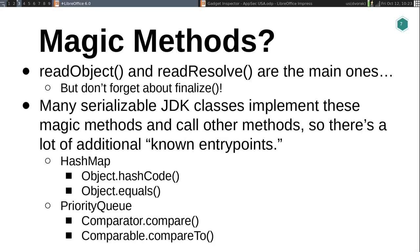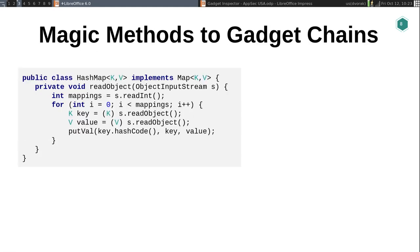HashMap is probably the best example because there are lots of gadget chains built using hashCode or equals. But there's other stuff in the JDK like a PriorityQueue, which will reorder things after reading them back in from the payload, so it ends up calling compare or compareTo on all those objects it reads in.